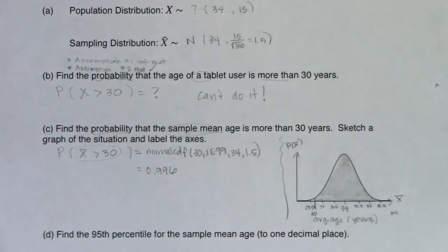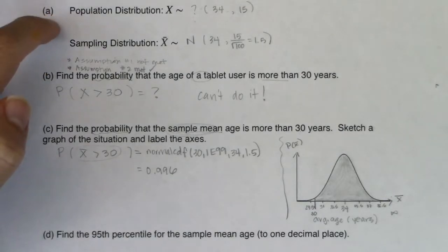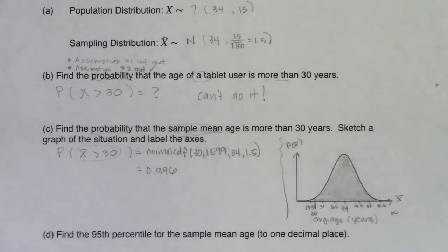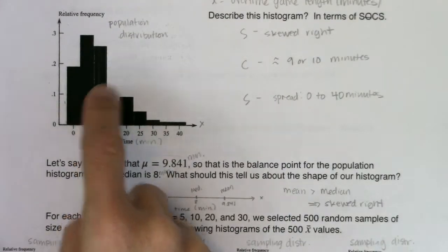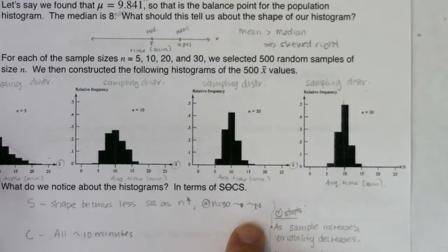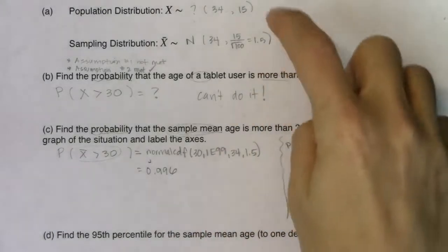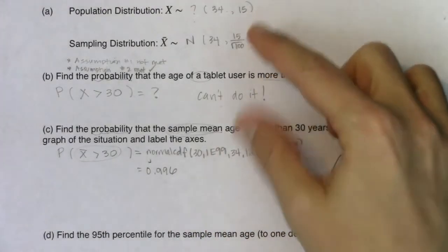To reiterate: I could not use normalcdf for part b because I didn't know the shape of the population distribution. But the CLT kicked in for the sampling distribution, so I was allowed to use normalcdf in part c. Regardless of the shape you start with, sampling distributions go normal by n = 30 — we saw this in example two with a severely skewed distribution that became approximately normal at averages of size 30.